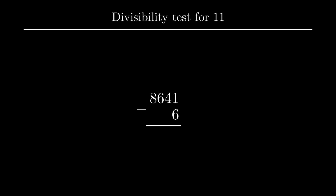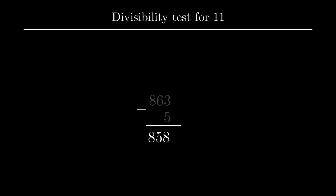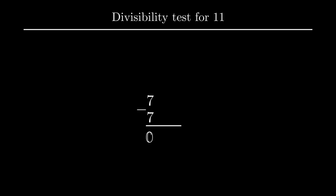Consider a number as 86416. Here the last digit is 6, so 6 is subtracted from the remaining digits 8641, resulting in a difference equal to 8635. Since the number is still large, again the difference is obtained by subtracting 5 from 863, giving 858. The process is repeated by subtracting 8 from 85, giving 77. Now 7 is subtracted from 7, giving 0. Since 0 is divisible by 11, the given number is also divisible by 11.